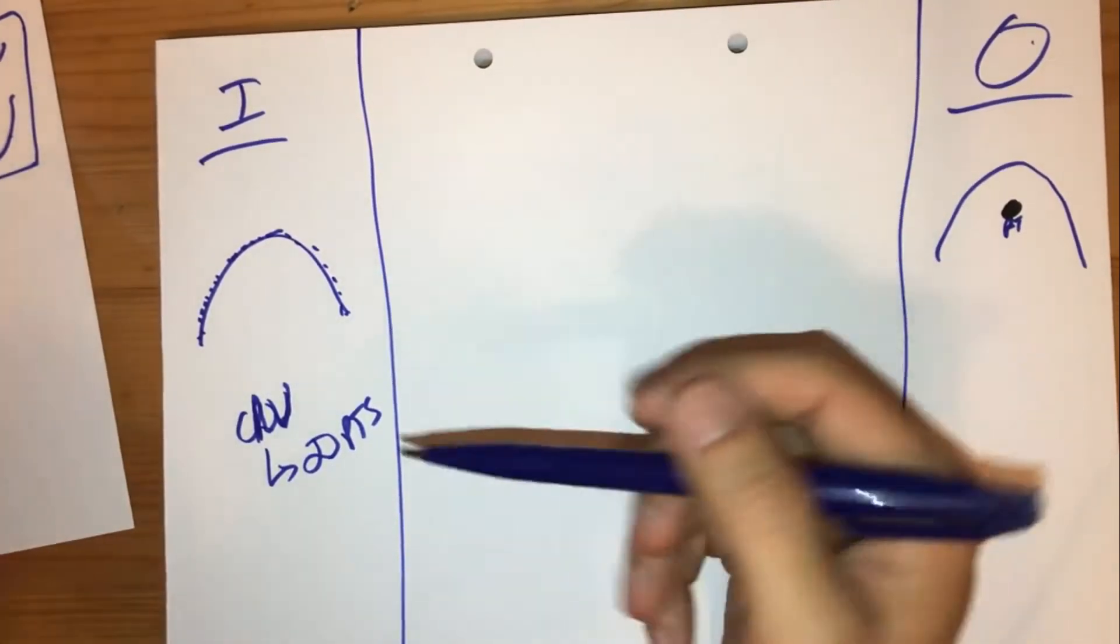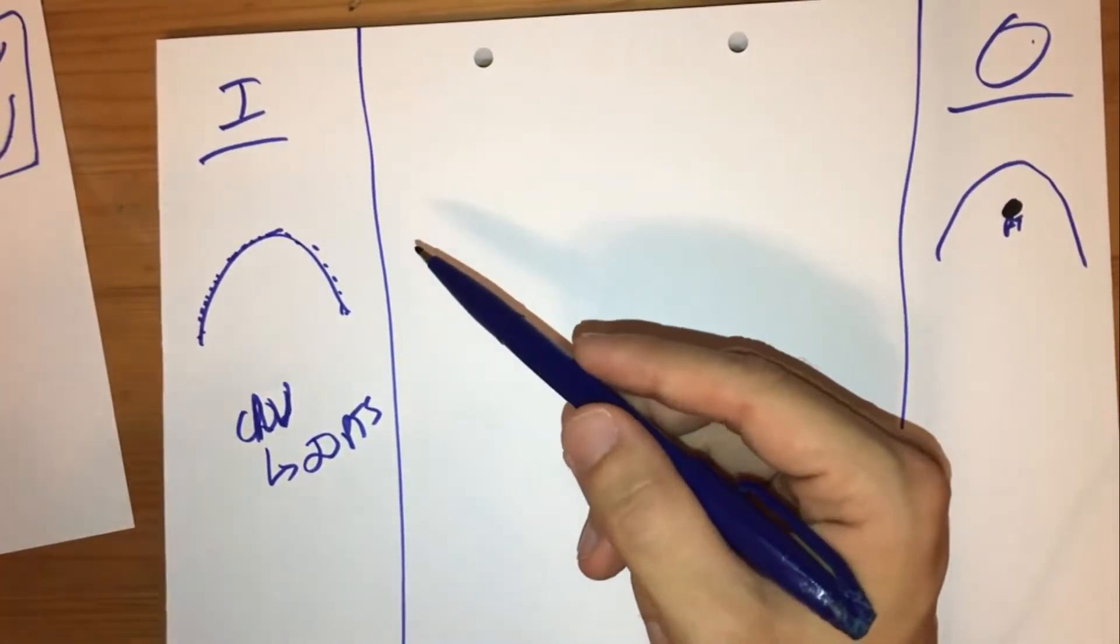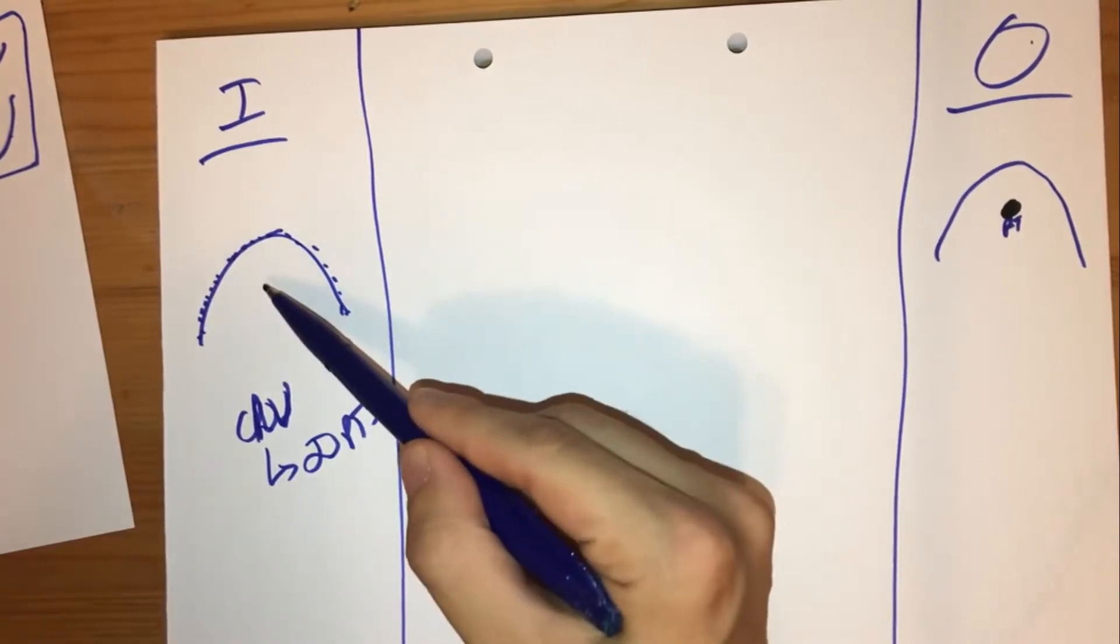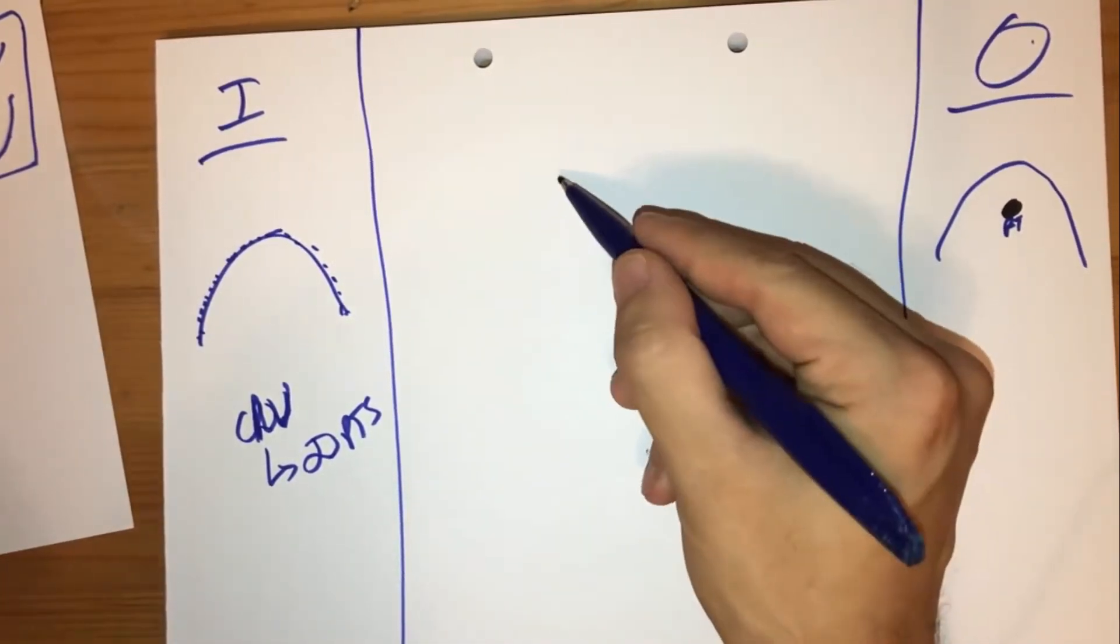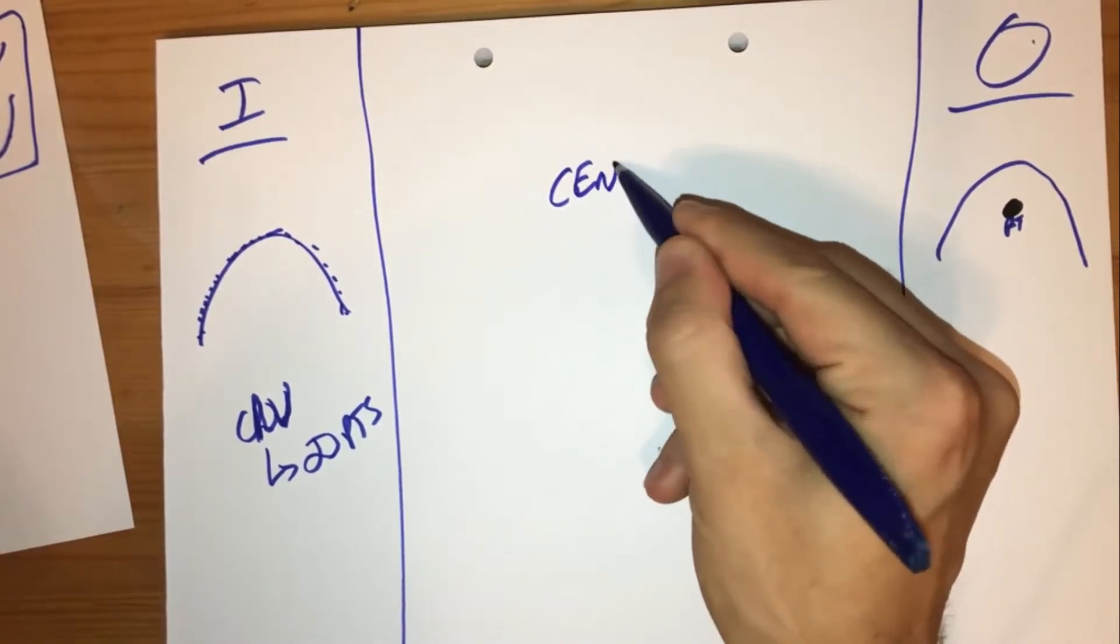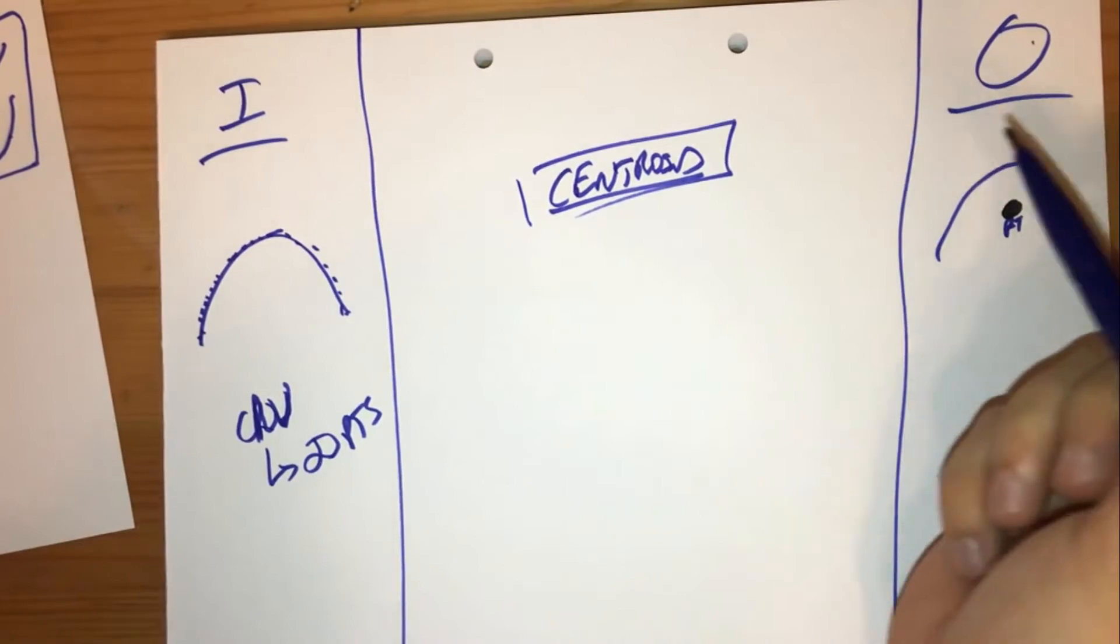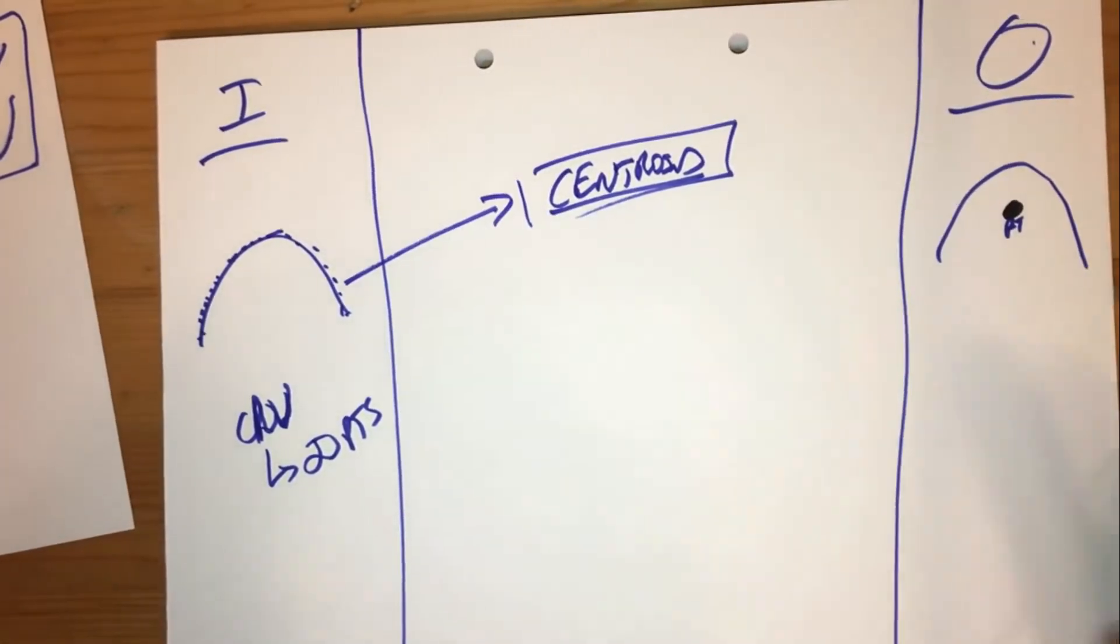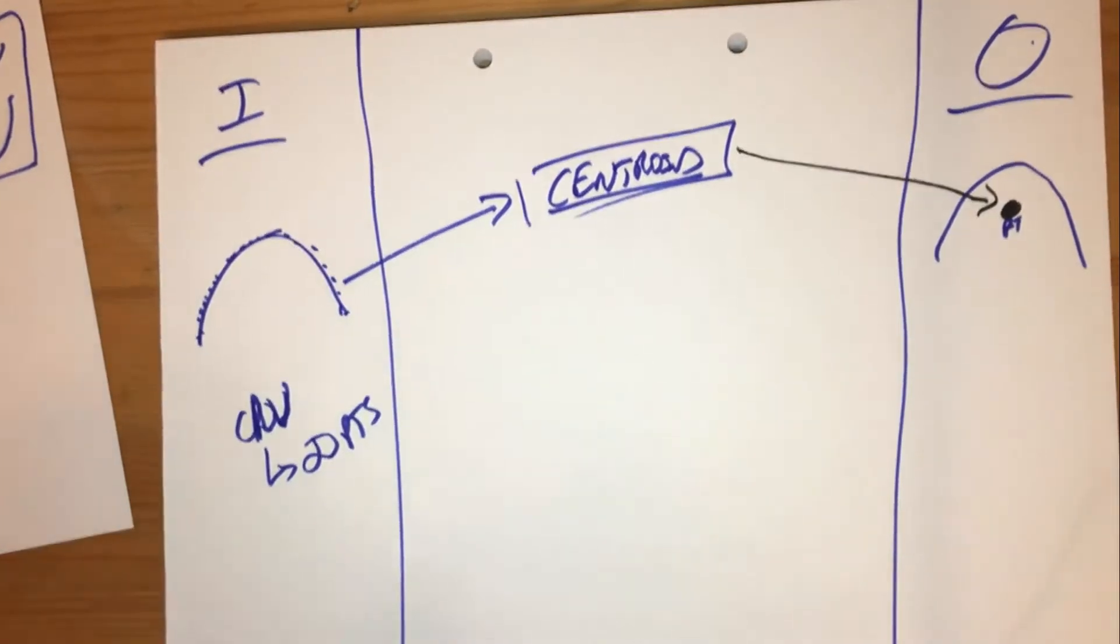So one could get clever and just say, well, what's the definition of a point that exists in the middle of a bunch of other points? You could just say, it's the centroid. It's the geometric centroid that would get you that same picture. That would get you something like that.